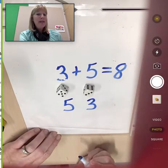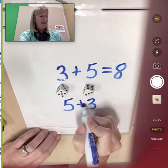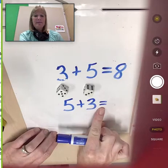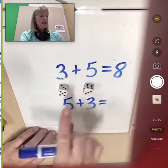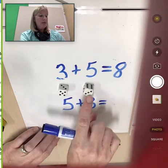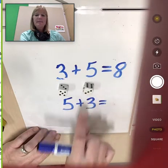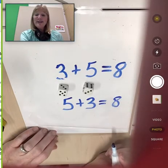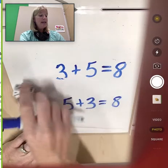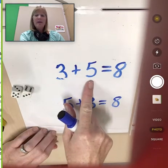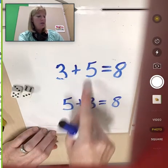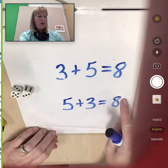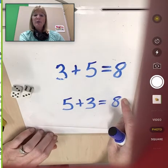What are we going to put between them first graders? An addition sign. Because we're finding the sum. Now we need our equal sign. Now, what is five plus three more? Did you get eight? Look, you just used the turnaround rule. We could say three plus five. Or we could turn those numbers around. Five plus three. And we get the same answer for both problems. That's using the turnaround rule. Way to go, first graders.